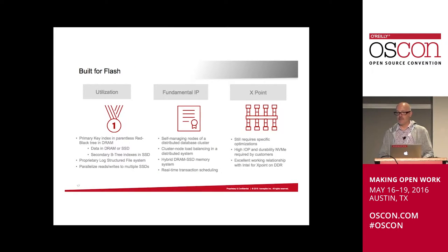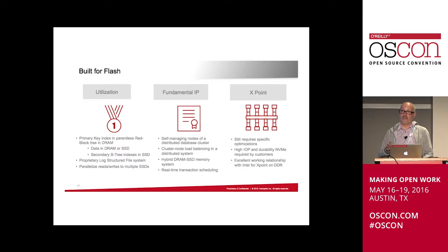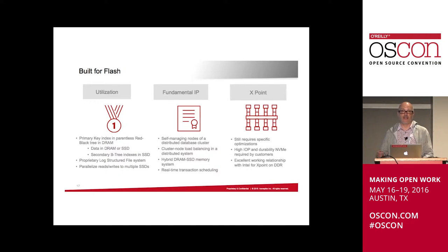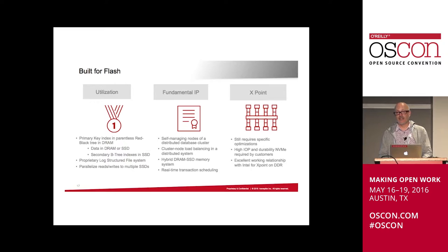How does Aerospike do that? It's a distributed key-value store. We store our primary key index as a red-black tree in DRAM and the data gets stored on SSD. Primary key lookup in DRAM is very fast, then you get parallelized access to SSDs — up to 16 or 20 SSDs per chassis — giving very high throughput and low latency with sustained performance.